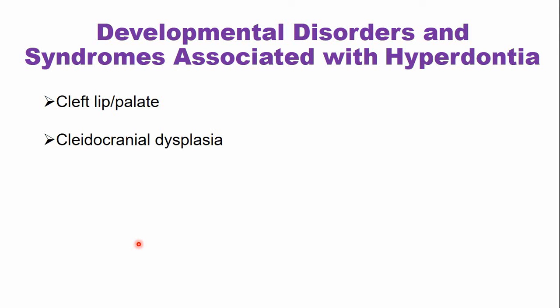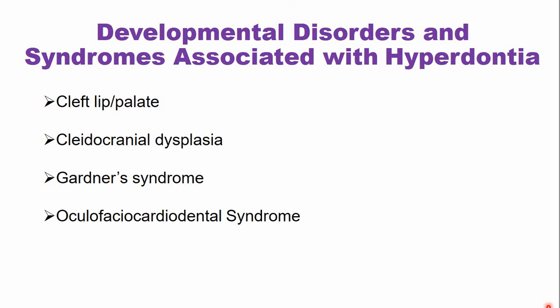Hyperdontia can occur in the absence of developmental disorders and syndromes — for example, mesiodans occurs without any associated disorder. But sometimes hyperdontia occurs in association with a developmental disorder or syndrome. In cleft lip and palate patients there is hyperdontia. In cleidocranial dysplasia, patients have multiple supernumerary teeth that are sometimes unerupted. In Gardner syndrome, there are unerupted supernumerary teeth. Similarly, oculofacial cardiodental syndrome and autodental syndrome are also associated with hyperdontia.